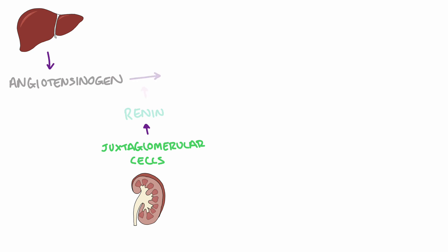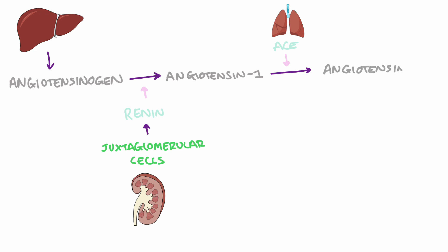This activated protein is called angiotensin 1. However, angiotensin 1 still requires further modification before having any effect. As angiotensin 1 circulates in the blood it is cleaved by a second enzyme found in the endothelium of the capillaries in the lungs. This enzyme is aptly named angiotensin converting enzyme, and this causes the formation of angiotensin 2. Angiotensin 2 is now in its fully activated form, and it circulates in the blood activating angiotensin receptors found in a wide range of places throughout the body.